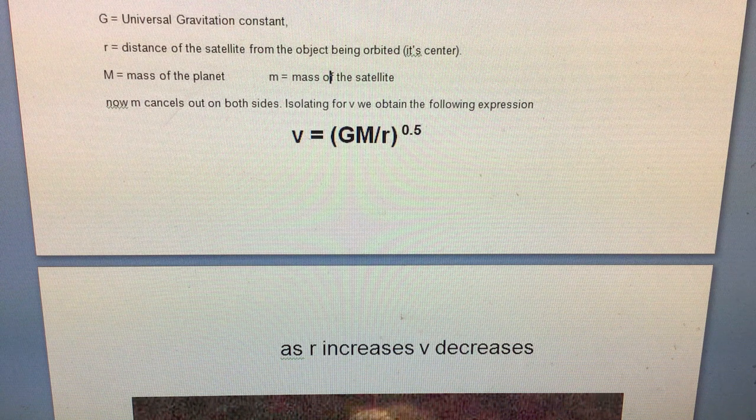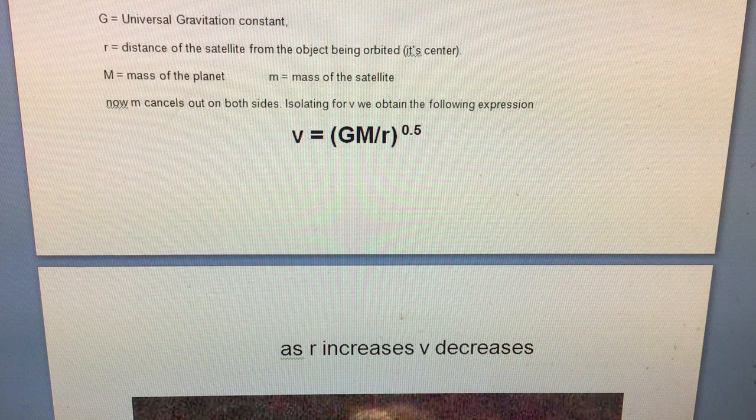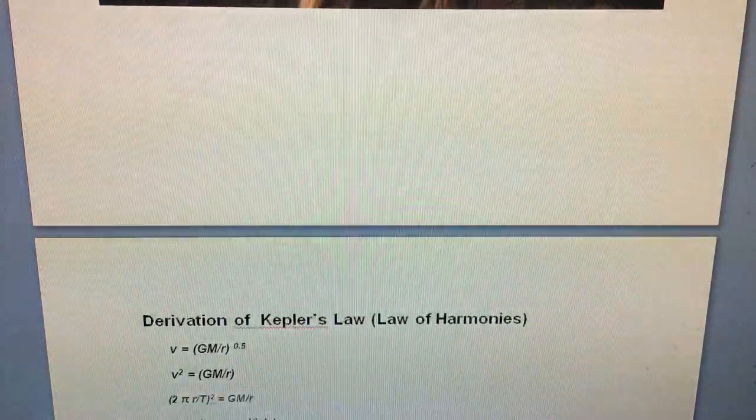So this is a useful formula that you can employ to determine the speed of a satellite in orbit. And note, it doesn't depend on the mass of the satellite - it just depends on the mass of the body being orbited as well as the radius of orbit.